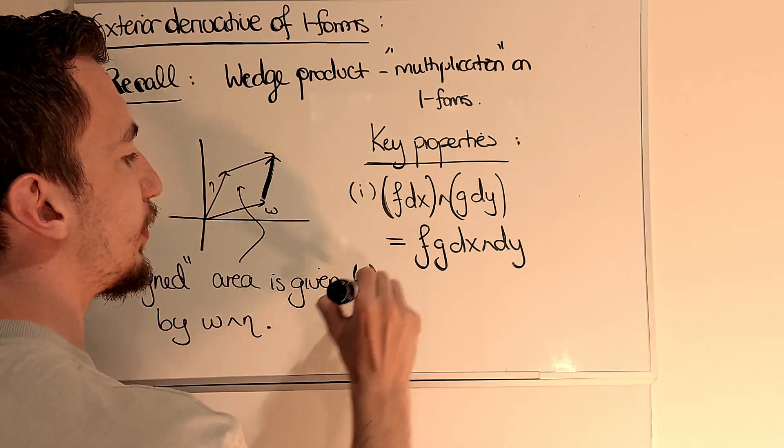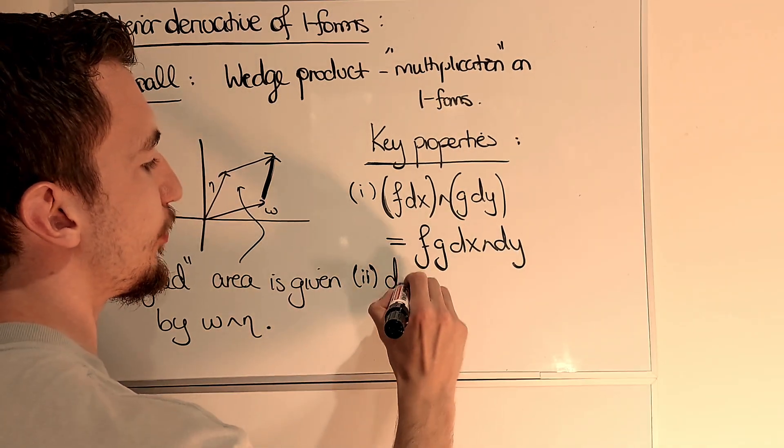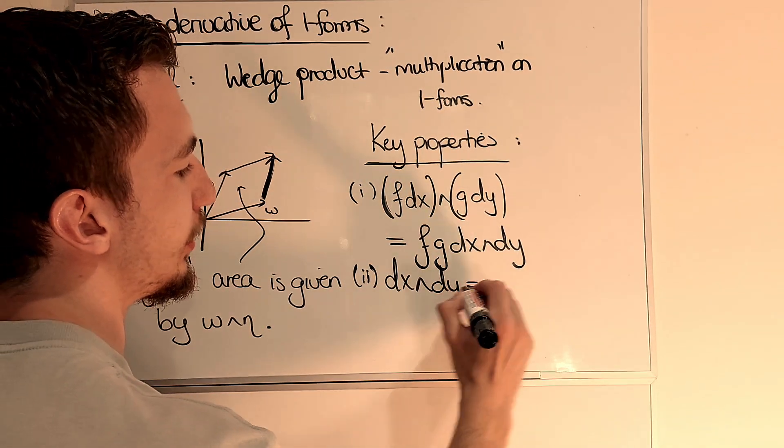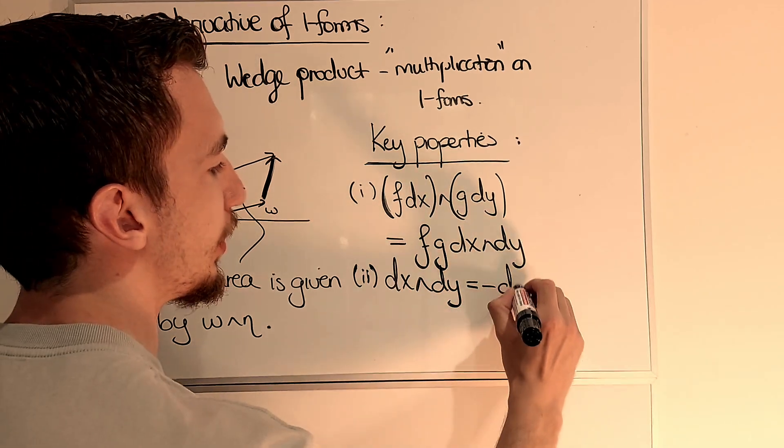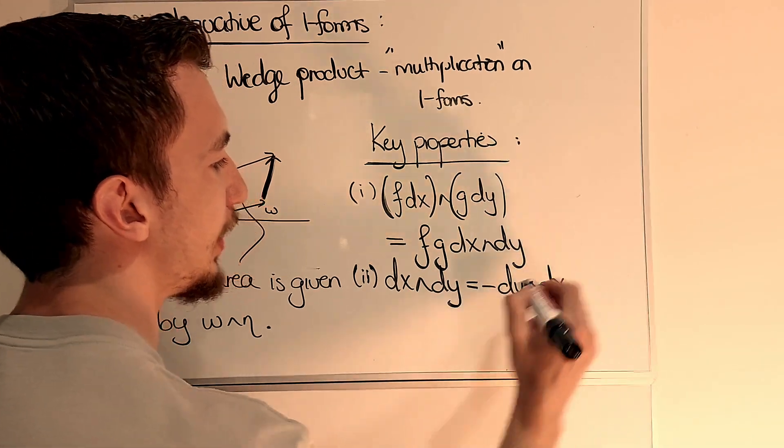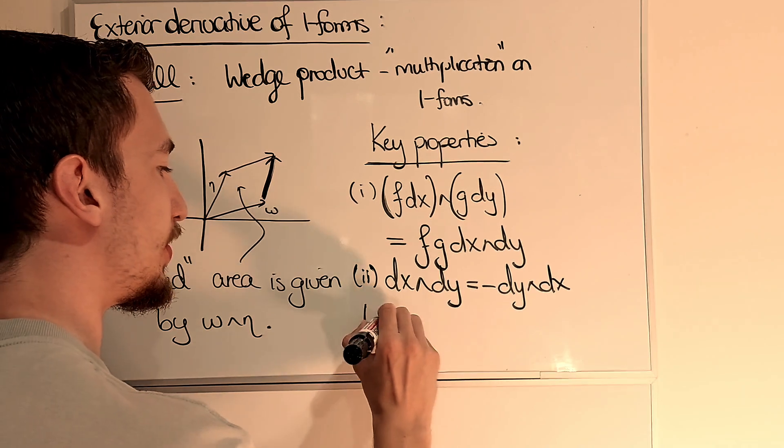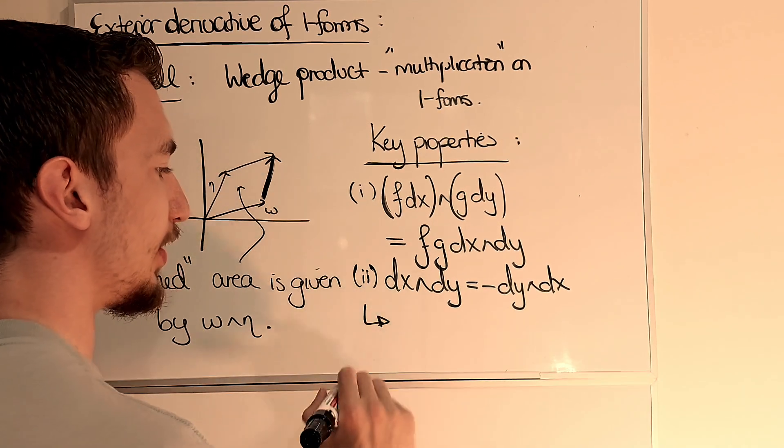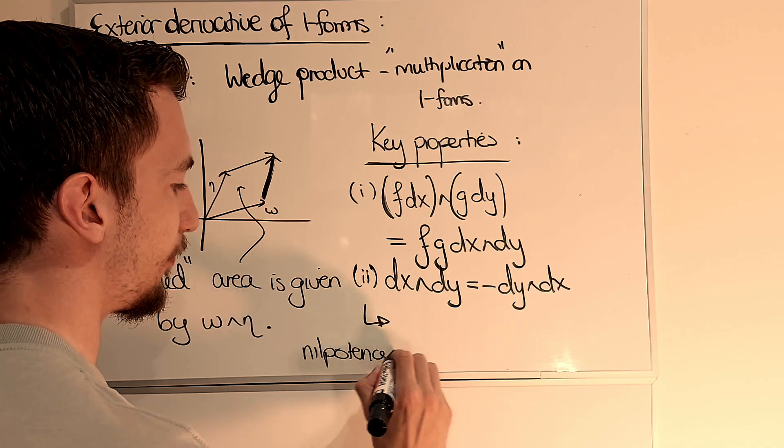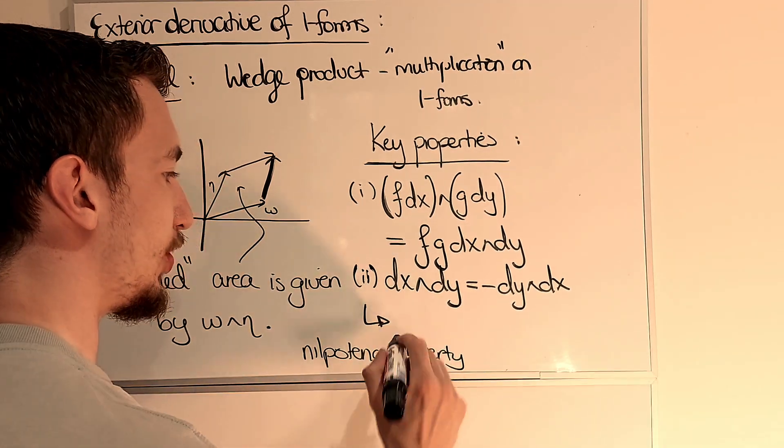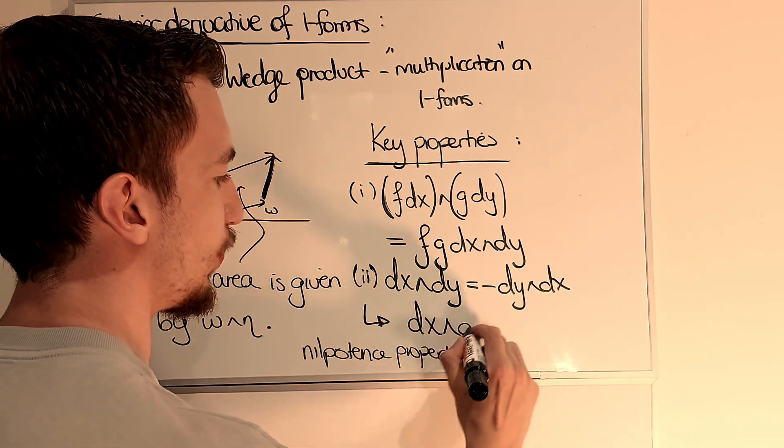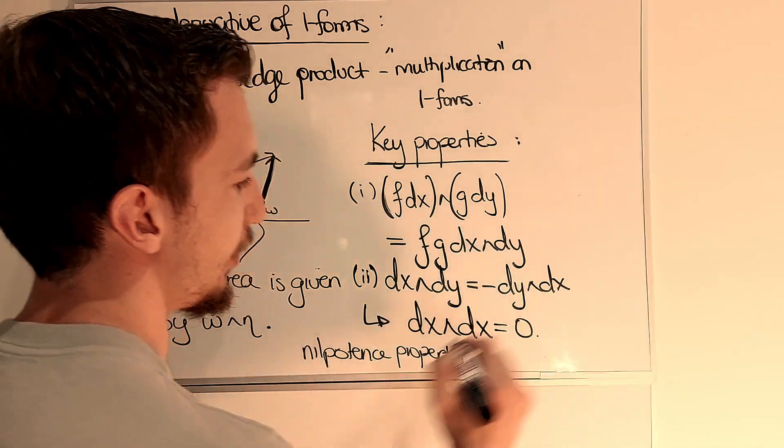The other key property we saw was the anti-symmetry, namely dx wedge dy is minus dy wedge dx, which in particular implies the nilpotence property, which is that dx wedge dx is zero.